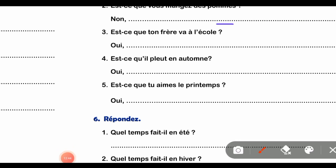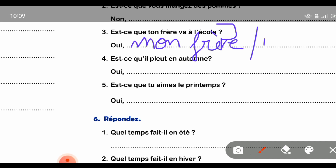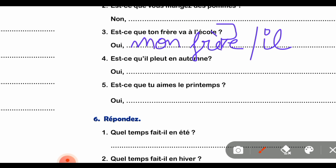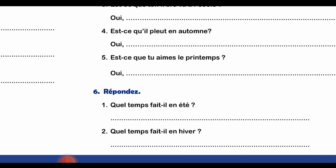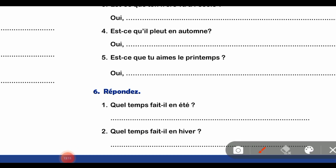Part number 3 - 'Est-ce que ton frère va à l'école' means does your brother go to school. Answer: 'Oui, mon frère va à l'école' या 'Oui, il va à l'école.' Part number 4 - 'Est-ce qu'il pleut en automne' means does it rain in autumn. Answer: 'Oui, il pleut en automne.'